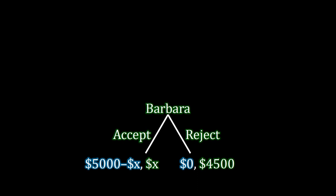Notice that these payoffs are color coded. If Barbara accepts an offer, Albert's payoff is $5,000 minus X dollars, because X is how much he has to pay Barbara to buy the vehicle. Meanwhile, Barbara receives a flat X dollars. On the other hand, if Barbara rejects, there is no sale — Albert ends up with zero because no money changes hands, and Barbara continues to own the car she values at $4,500, so she gets a payoff of $4,500.